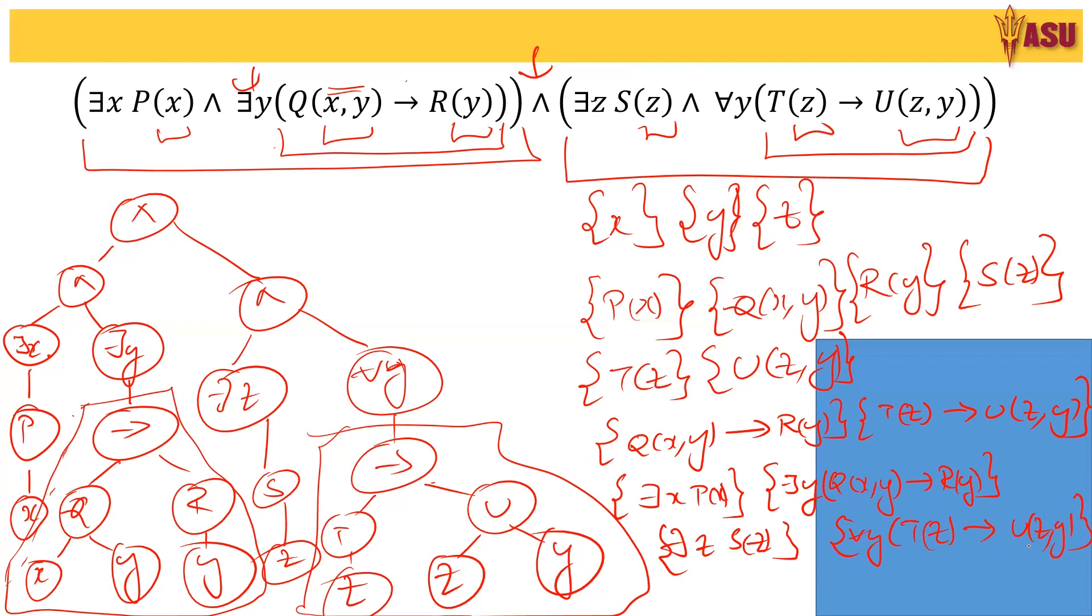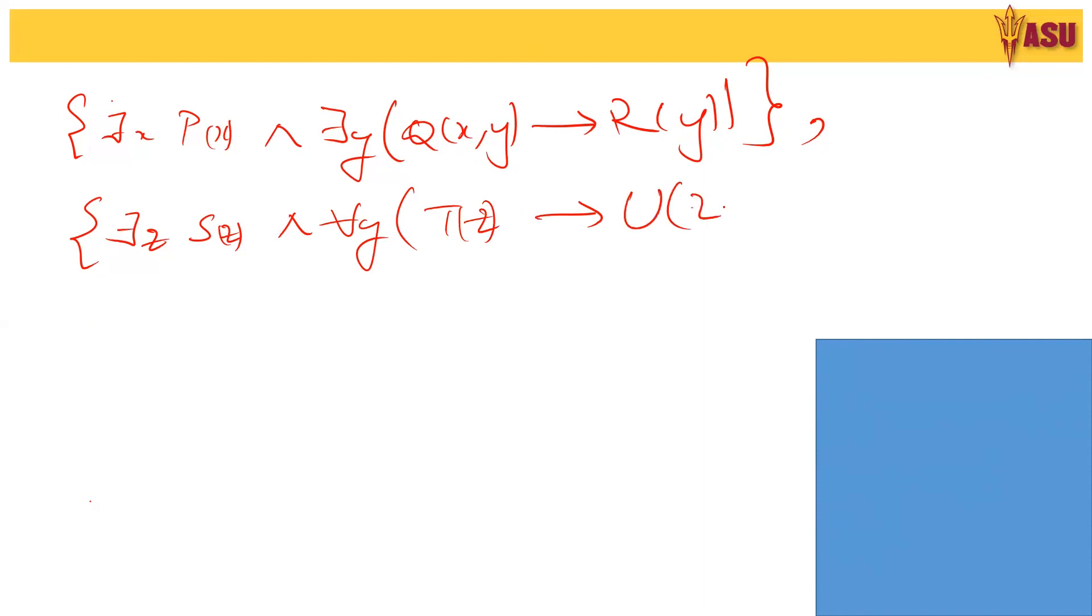Now, the last set is when we take the ands over here with respect to the sub-formulas. I'm going to write that in the next page for convenience. So the formulas would be there exists x, P of x and there exists y bracket open Q of x comma y implies R of y. So this is one sub-formula and the second sub-formula is there exists z, S of z and for all y, T of z implies U of z comma y.